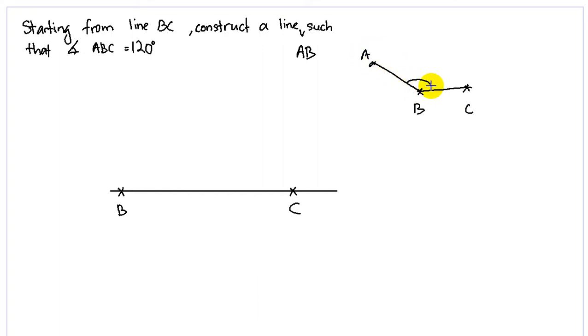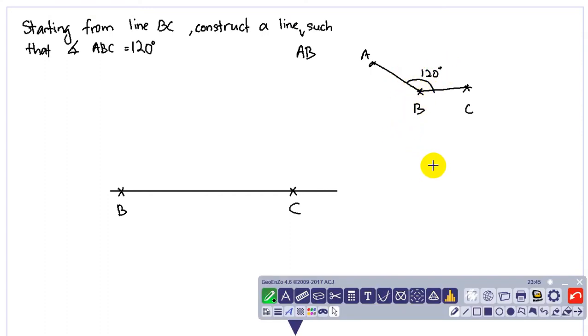Right, so this angle is actually 120 degrees. We want to construct this angle. Same thing - you want your angle at B, right? So first, take our compass, place it at B.